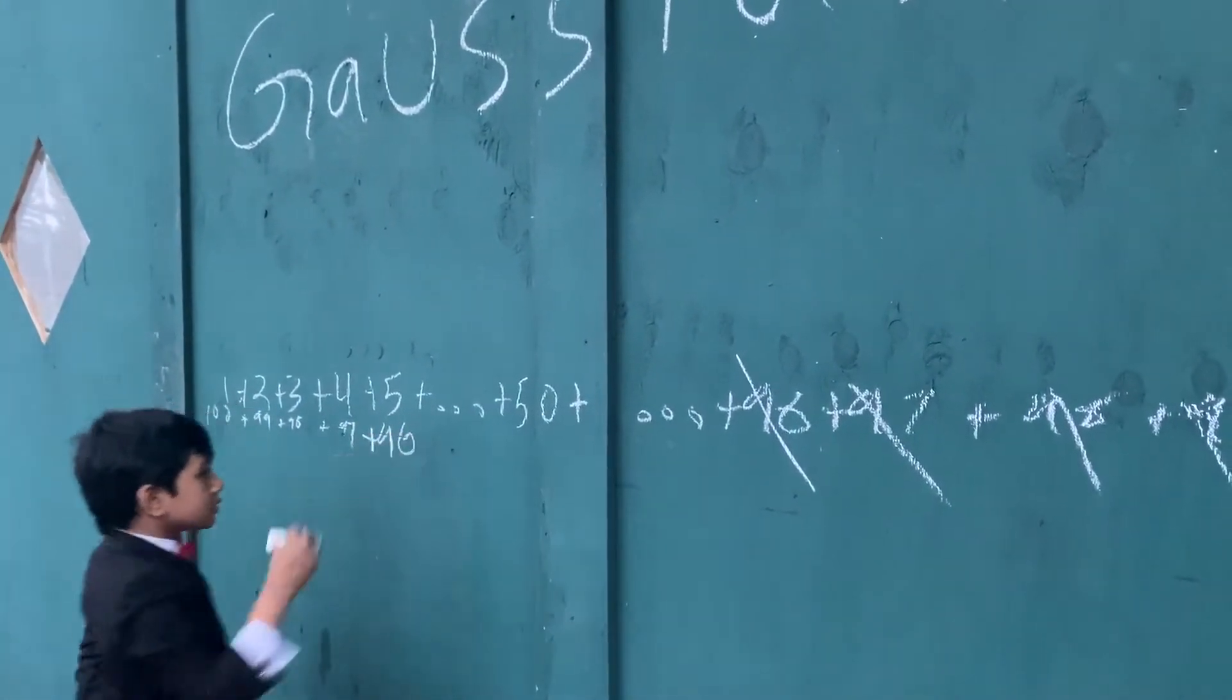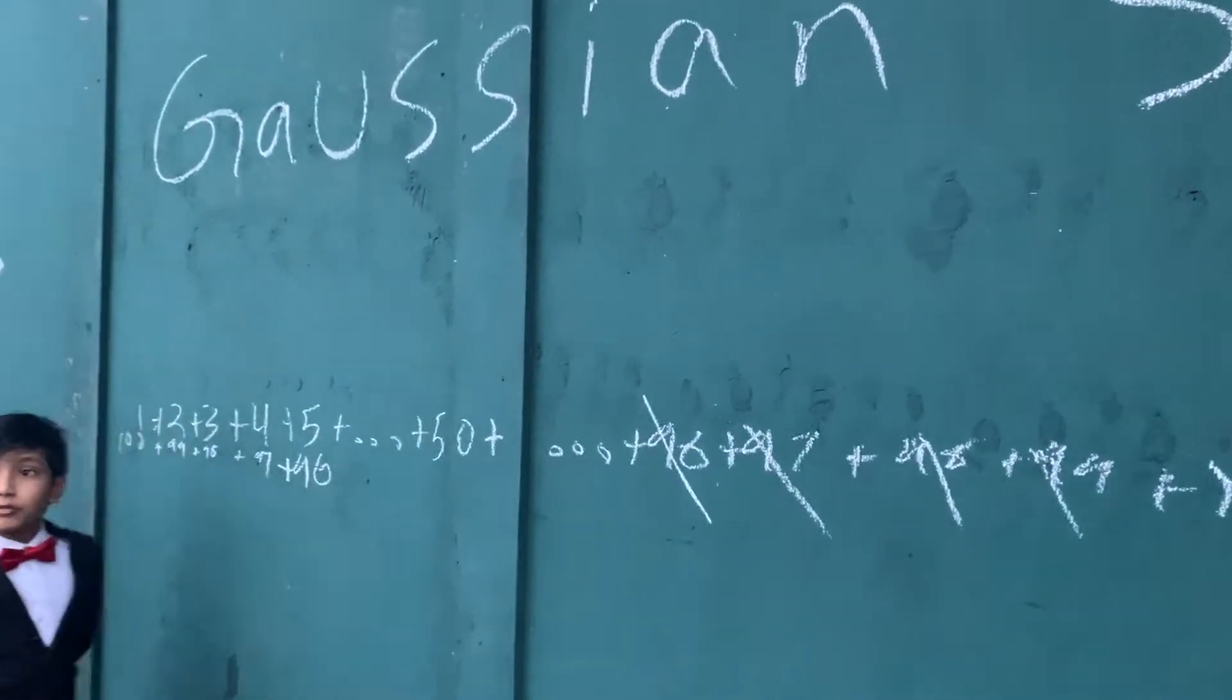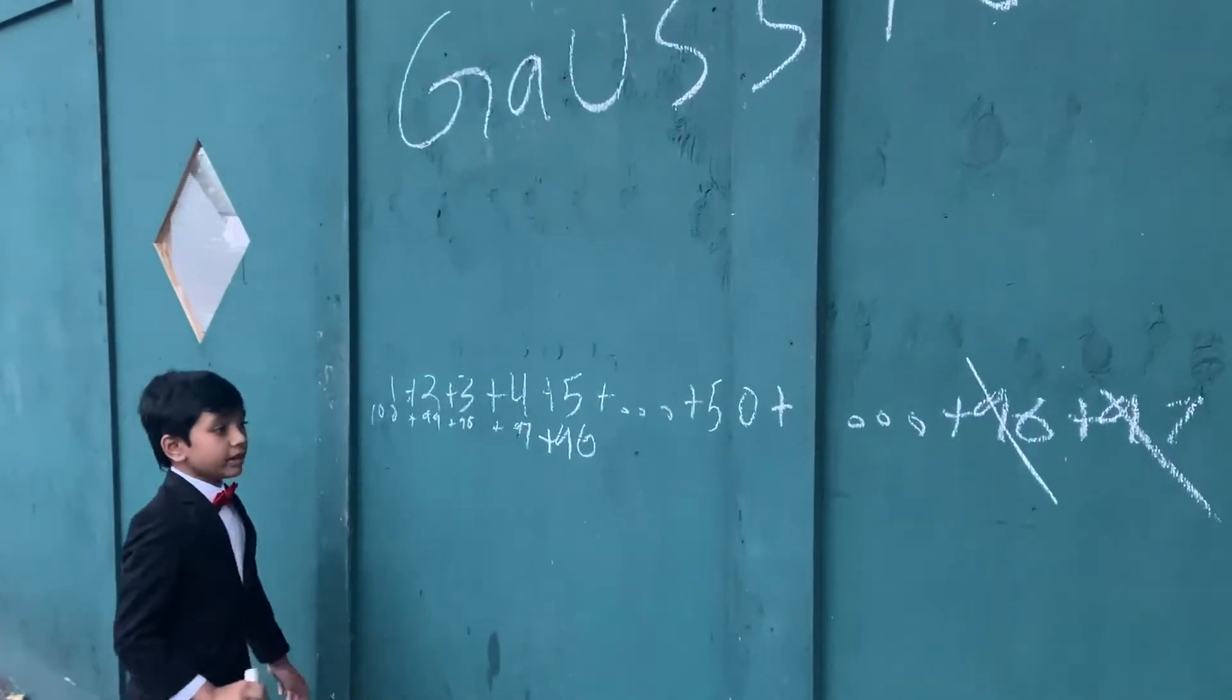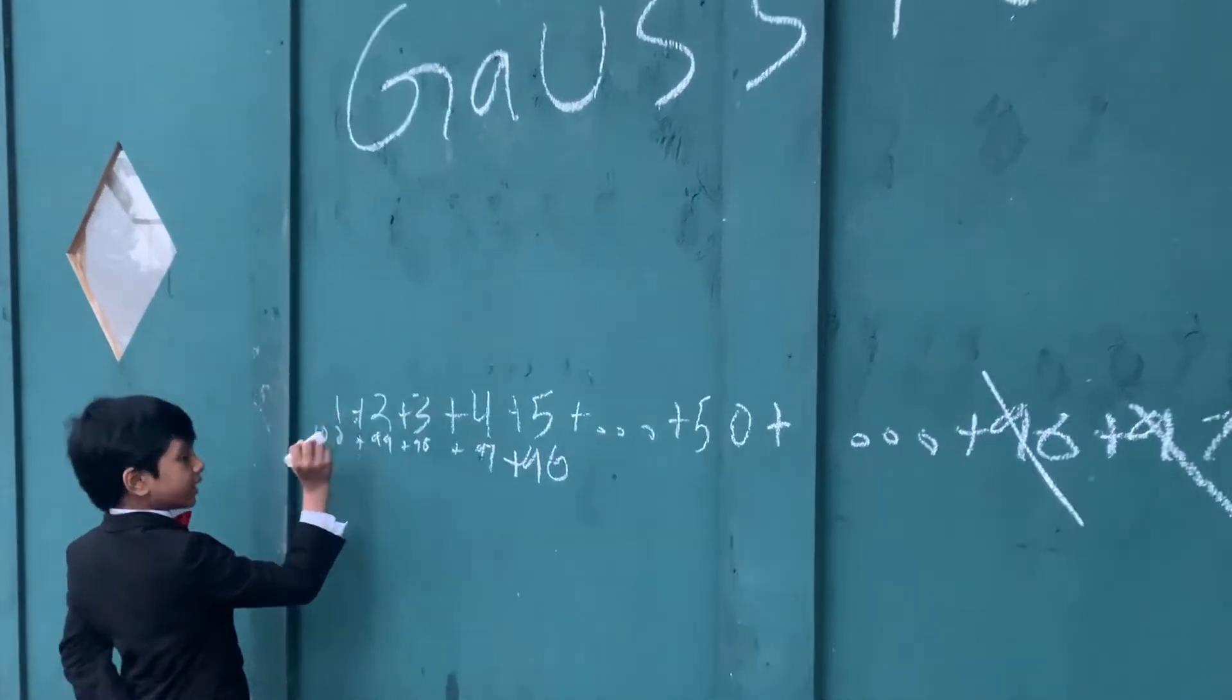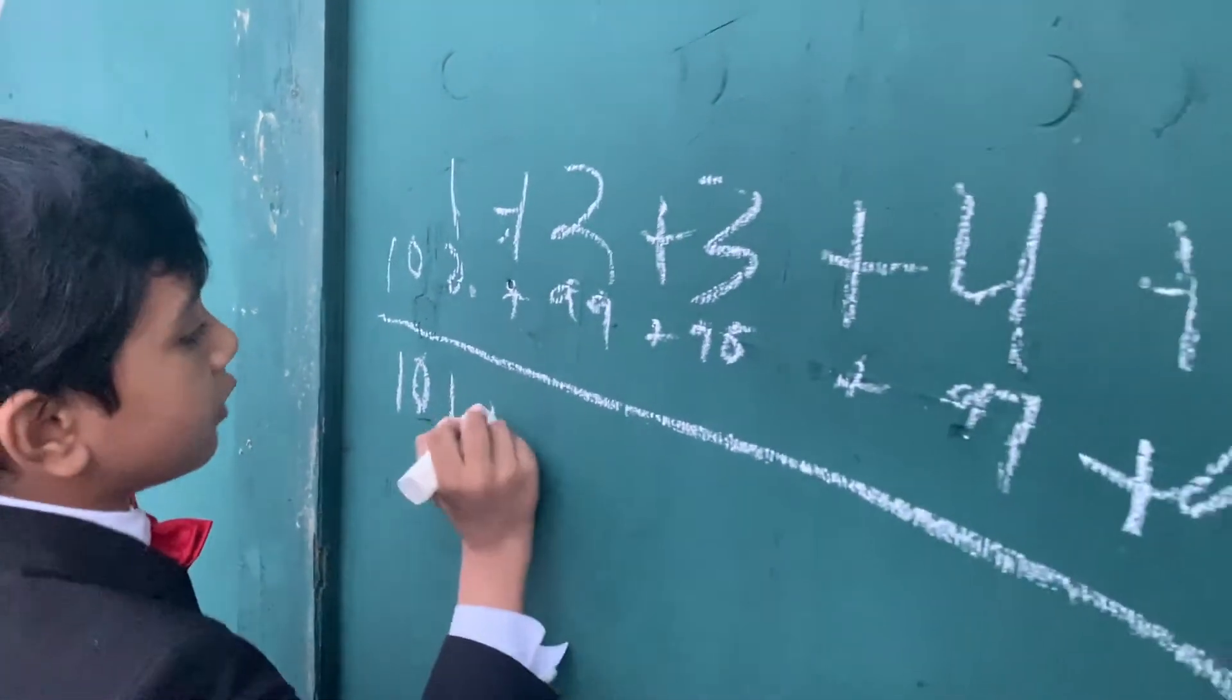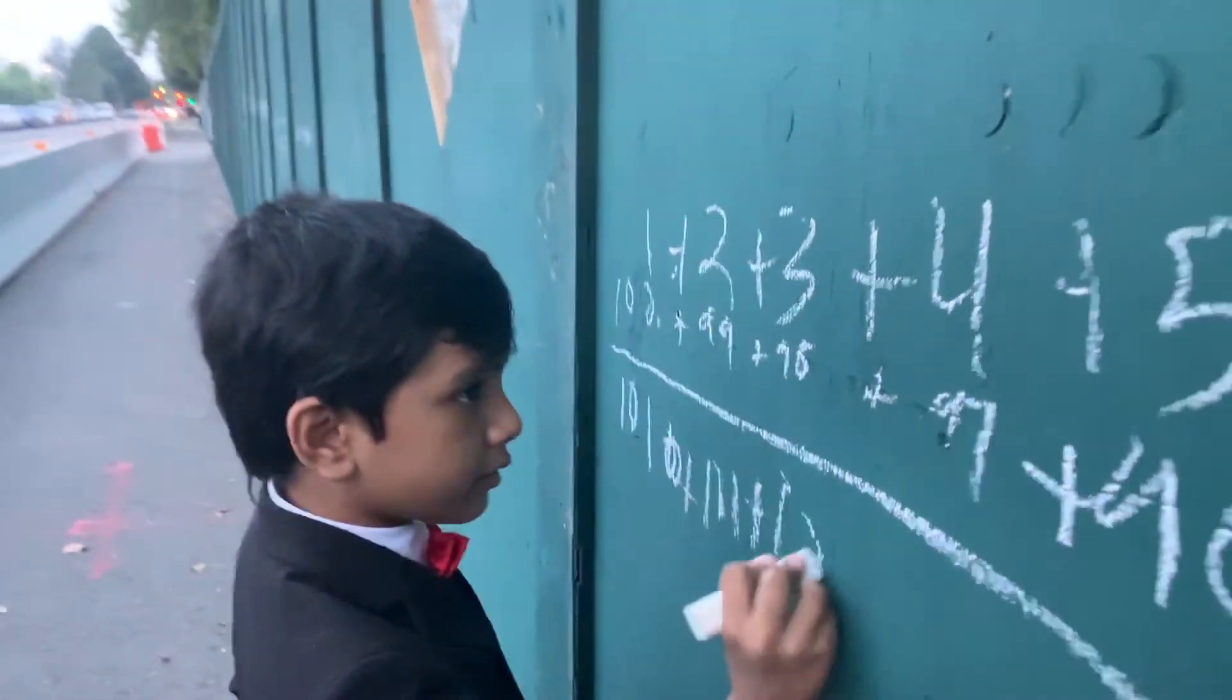All the way until you have grouped up all the numbers into pairs. By then, you should have had 50 pairs. You will notice that the sum of each pair will become 101 each and every time you add each pair.